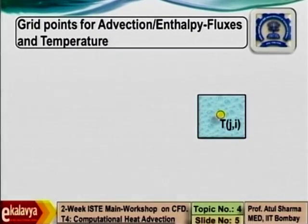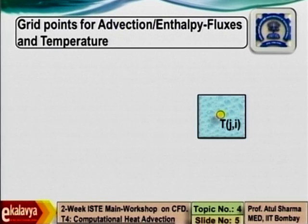The objective of showing different types of grid points is that when you program, this picture is very helpful in making a decision about what should be the minimum and maximum values in your loop. When you take a control volume there are two vertical phase centers and two horizontal phase centers. We want to use one set of running indices for temperature, qx, and qy — that is possible if you follow a convention.